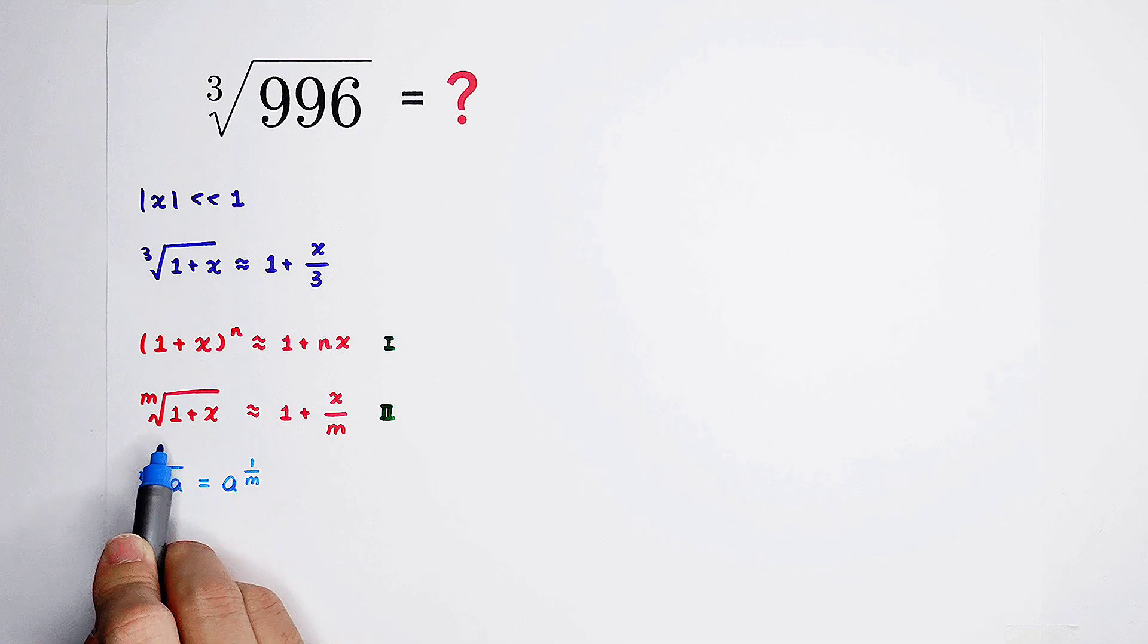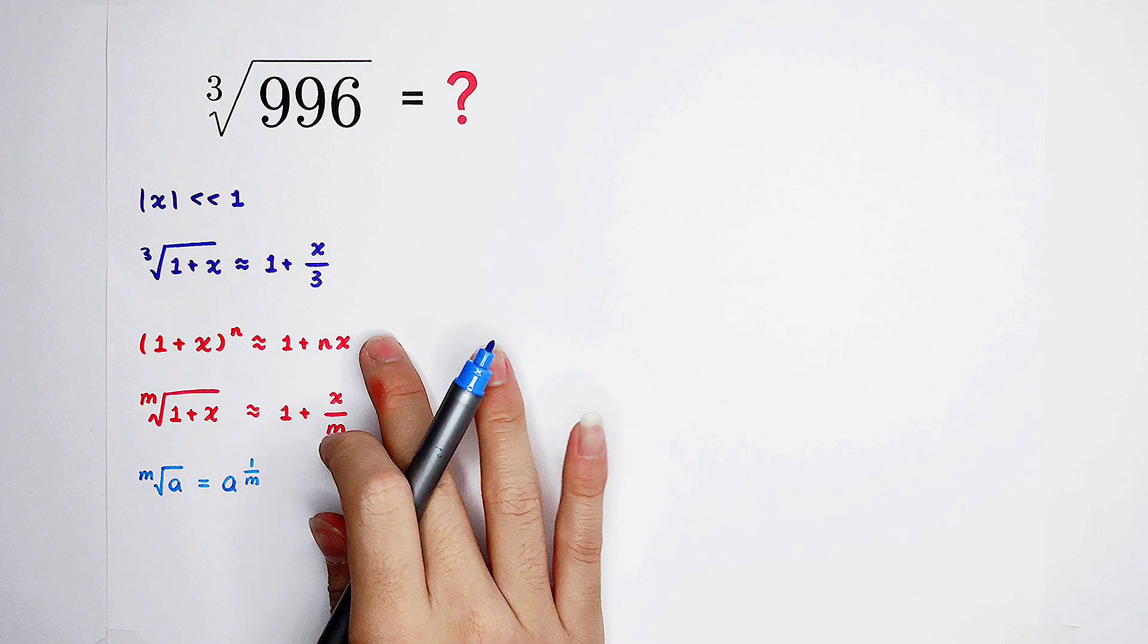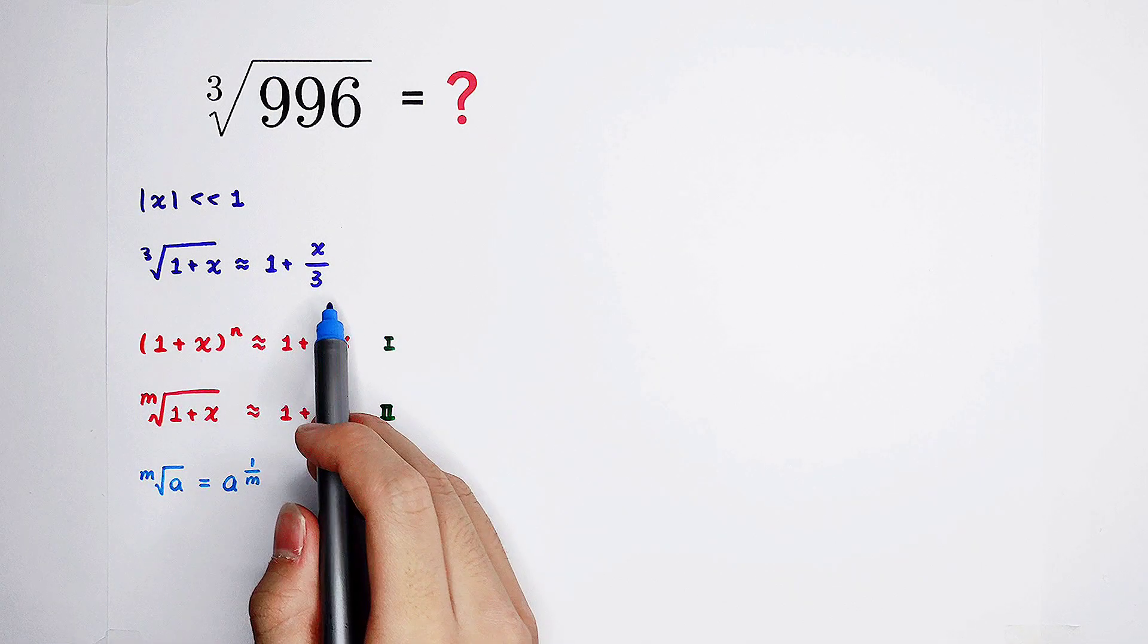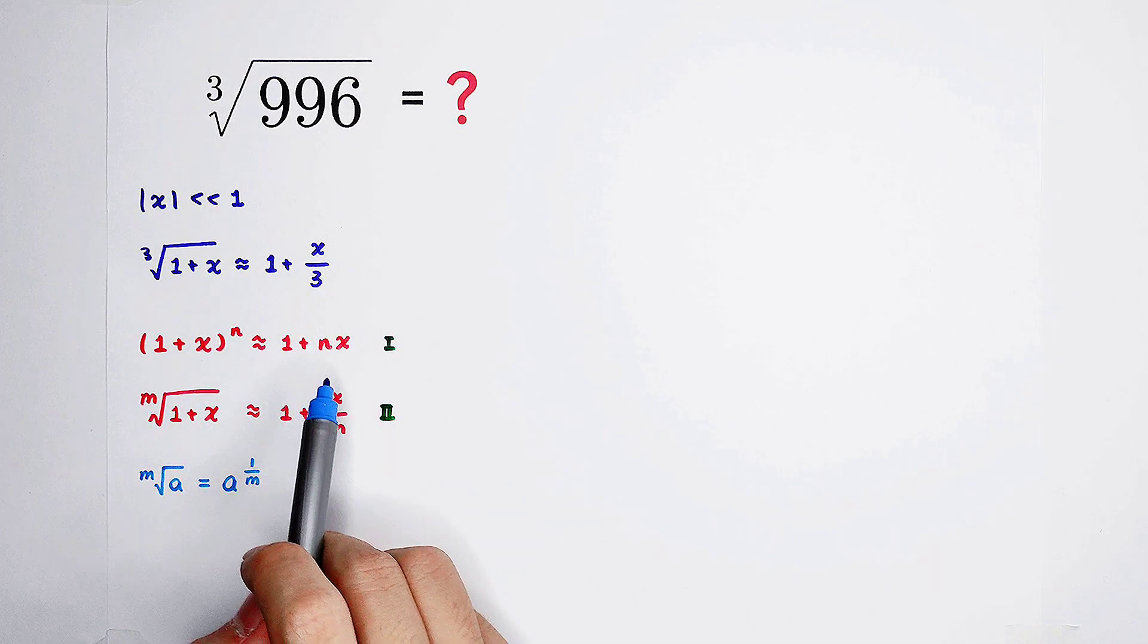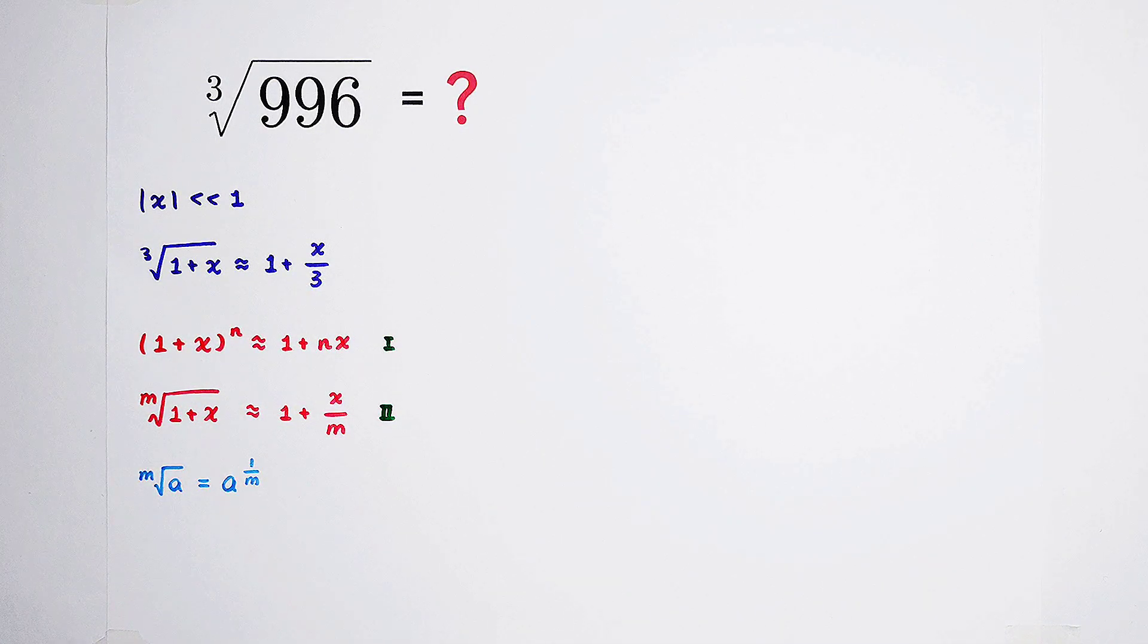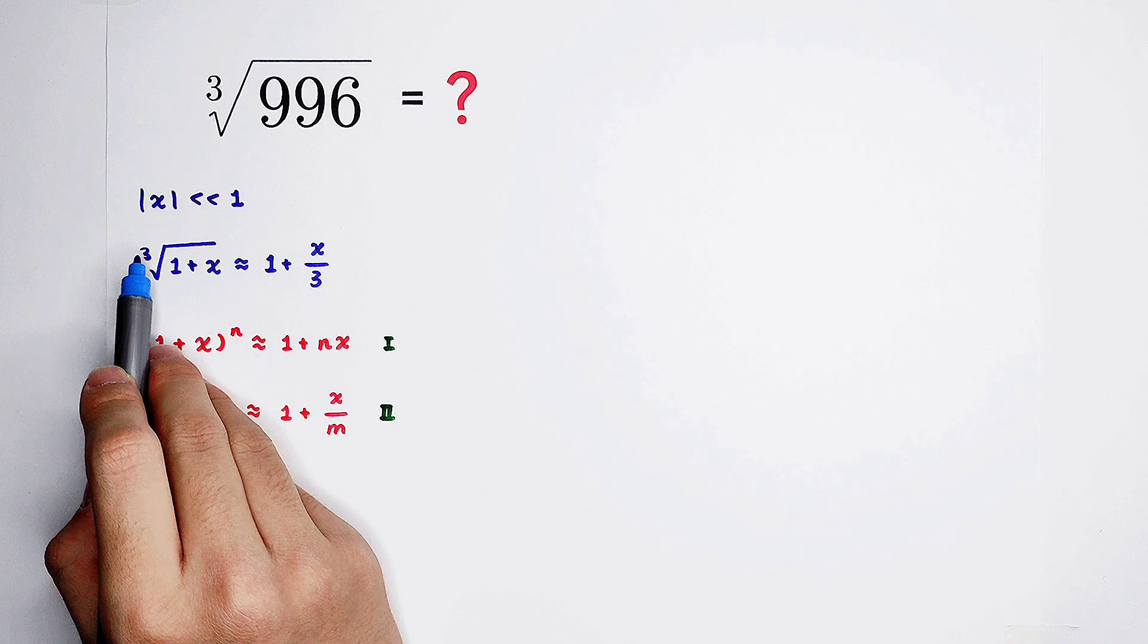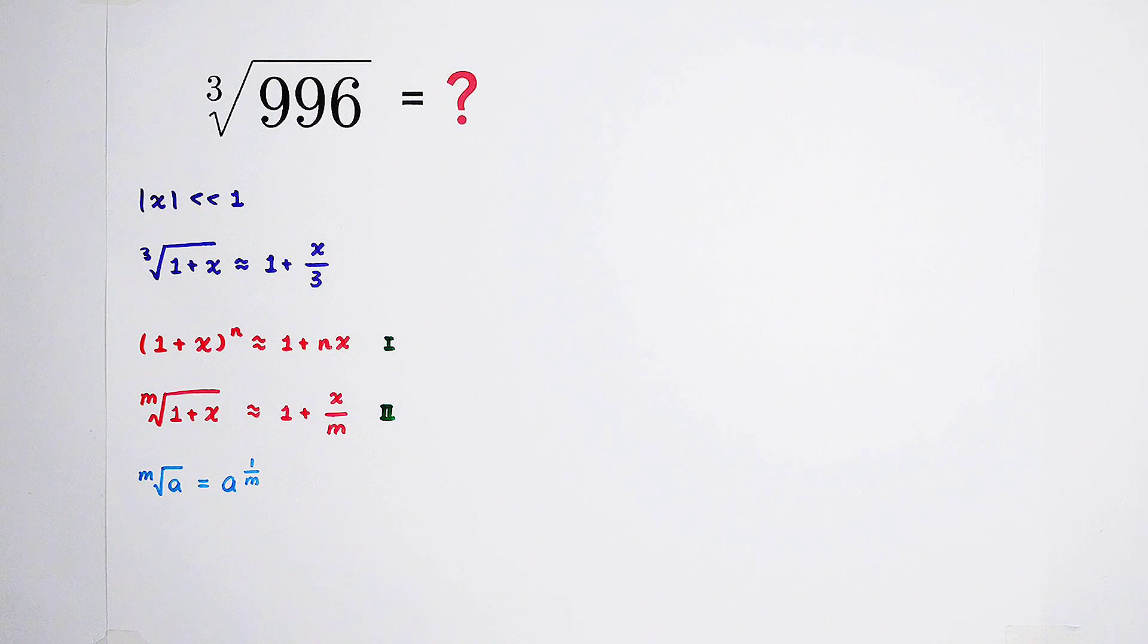And the left-hand side is actually 1 plus x, also the power of 1 over n. We have two formulas, or actually one. And for this question, the third root of 1 plus x is approximately equal to 1 plus x over 3. However, this approximation will be true if, and only if, the absolute value of x is much smaller than 1. For example, 1 over 100, 1 over 2,000, 1 over 10,000. Of course, the approximation will be better.